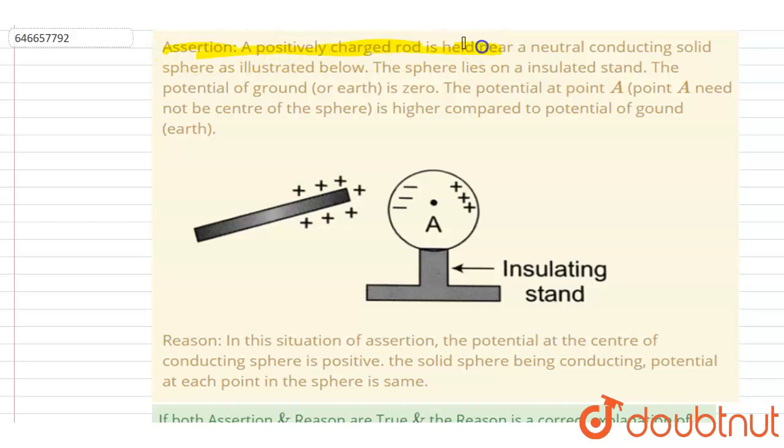that a positively charged rod is held near a neutral conducting solid sphere as illustrated below. The sphere lies on an insulated stand.